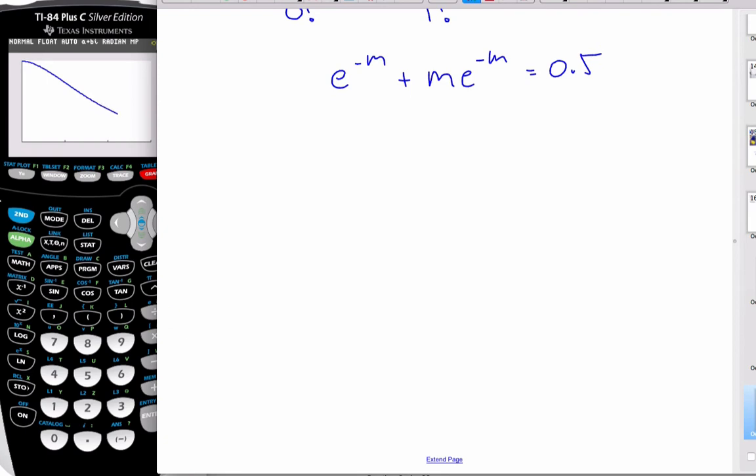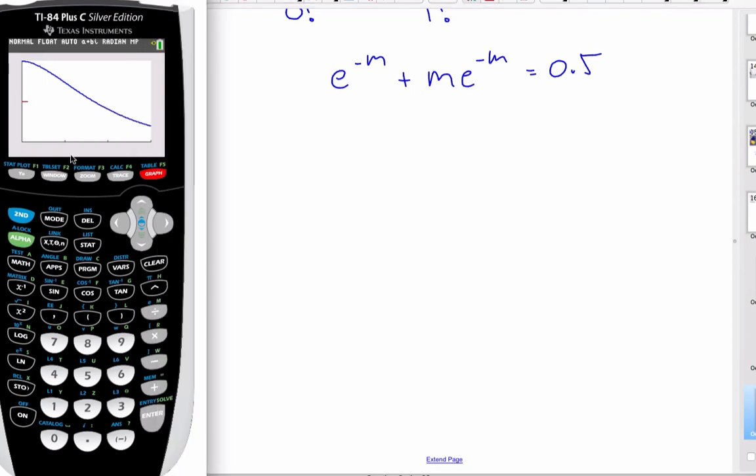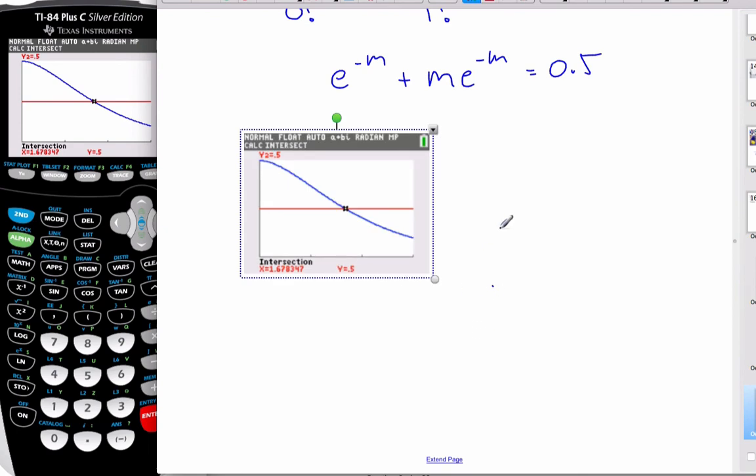Once we do graph it and it finishes, we're going to look for the point of intersection. And then we can see from this intersection that this is correct, the value of m does equal 1.678.